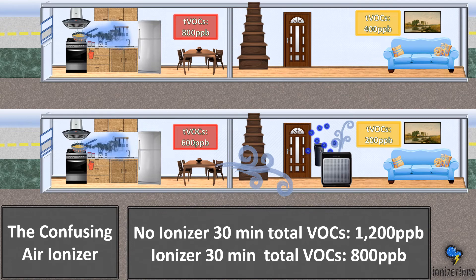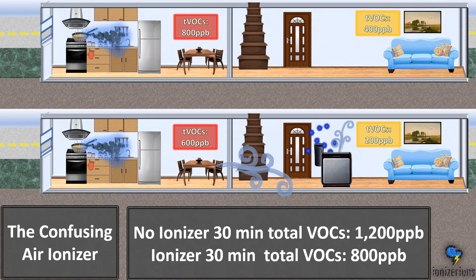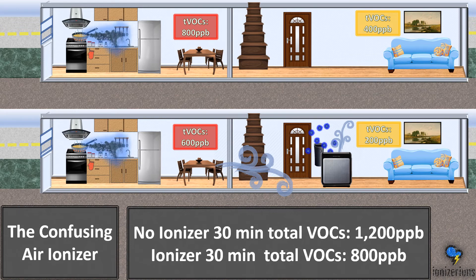The confusing air ionizer. Sometimes your ionizer may seem like it's not working and your VOCs are going up. In the first scene, you're cooking with no ionizer and have 800 parts per billion VOC; in the living room, 400 parts per billion. In the second scene, cooking the same food, you have 600 parts per billion VOC — less, because your ionizer in the living room is ionizing those VOCs — and 200 parts per billion in the living room. The total VOC with an ionizer is significantly less. Sometimes your VOC sensor won't make sense and you'll wonder why it's going up — it is going down, you simply don't have enough ionizers.